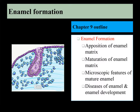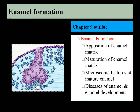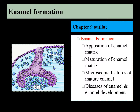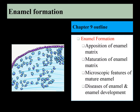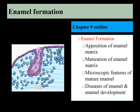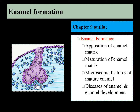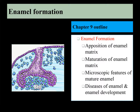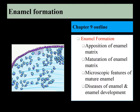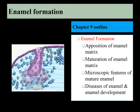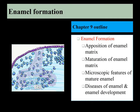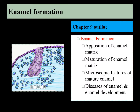Chapter 9, enamel formation. In this chapter, we're going to go into more detail about how enamel is formed. You do need to keep in the back of your mind the various early stages of tooth development: the placode, bud, cap, and bell stages. We're going to be beginning at the bell stage.